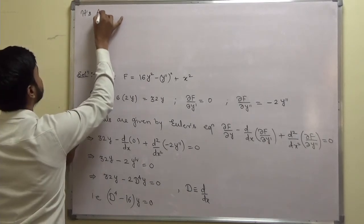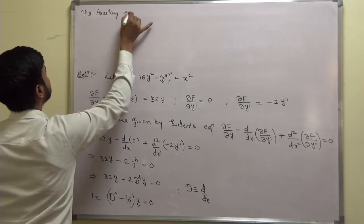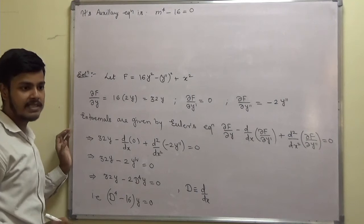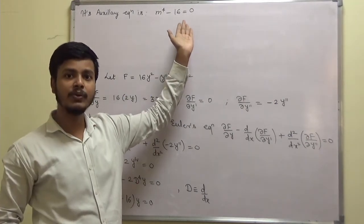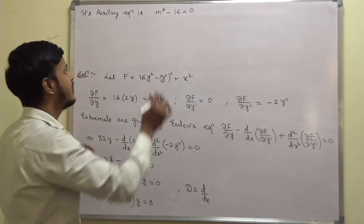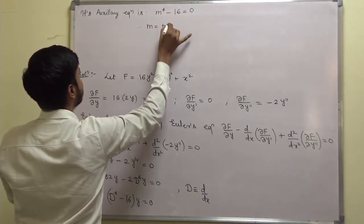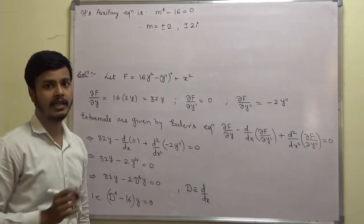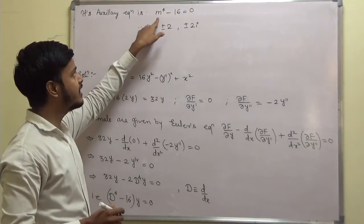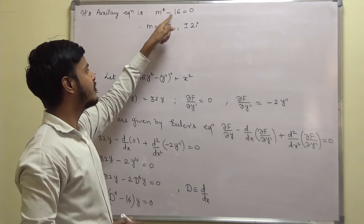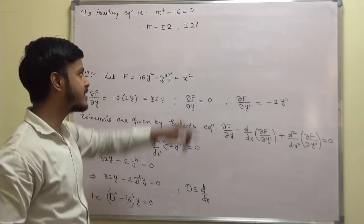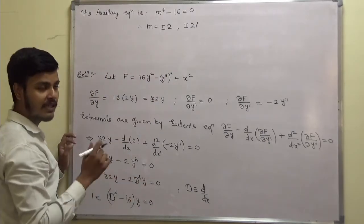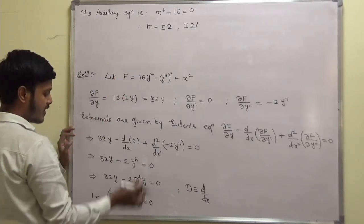The auxiliary equation is m⁴ minus 16 equals zero. The roots are m equals plus or minus 2 and plus or minus 2i. You can verify: 2⁴ = 16, so 16 minus 16 = 0; (2i)⁴ = 16·i⁴ = 16·1 = 16, so 16 minus 16 = 0. All four roots check out.